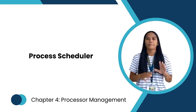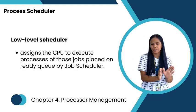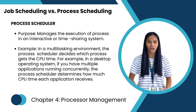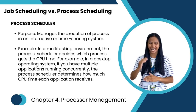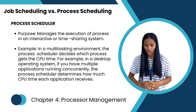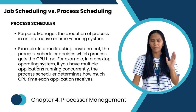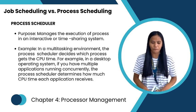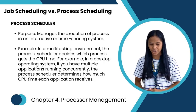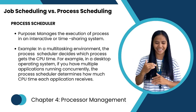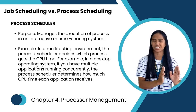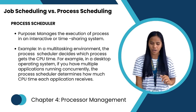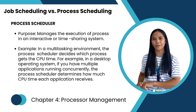The process scheduler is in charge of process scheduling. It manages the execution of processes in an interactive or time-sharing system. For example, in a multi-tasking environment, the process scheduler decides which process gets the CPU. In a desktop operating system with multiple applications running concurrently, the process scheduler determines how much CPU time each application receives.